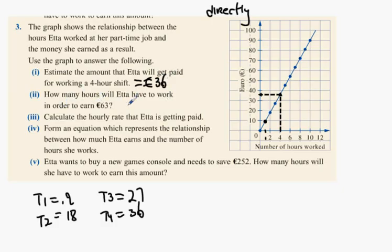How many hours will Etta have to work to earn €63? We go up the graph toward 63, then drop it directly down. How many hours is that? Between 6 and 8, so I reckon it's closest to seven hours.